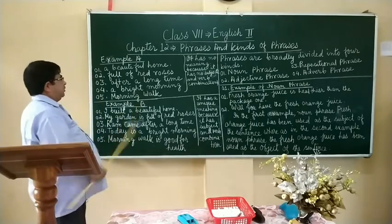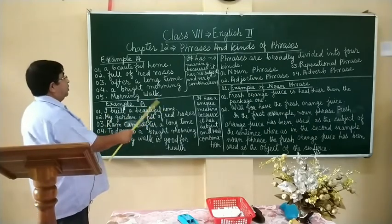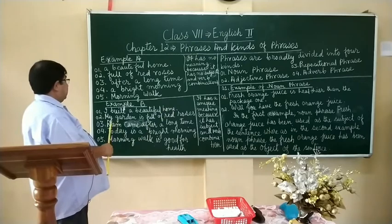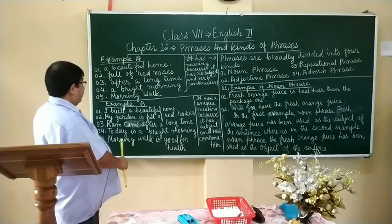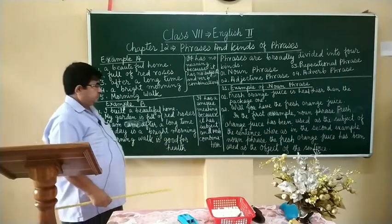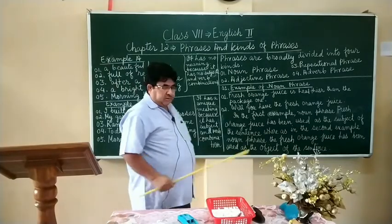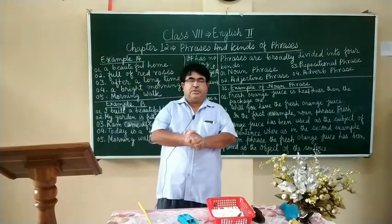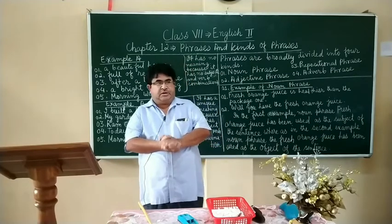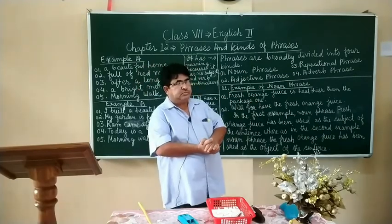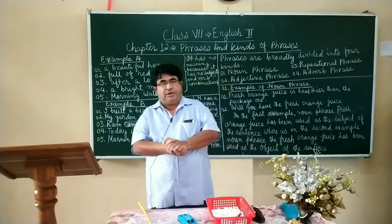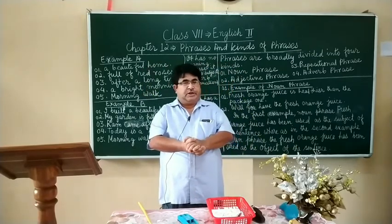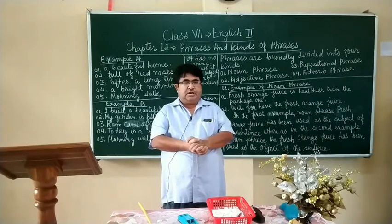See another example: I built a beautiful home. My garden is full of red roses. Ram came after a long time. Today is a bright morning. Morning walk is good for health. I think you have understood about phrase. Now let us learn how many kinds of phrases are there. Phrases are broadly divided into four kinds: noun phrase, adjective phrase, prepositional phrase, and adverb phrase.